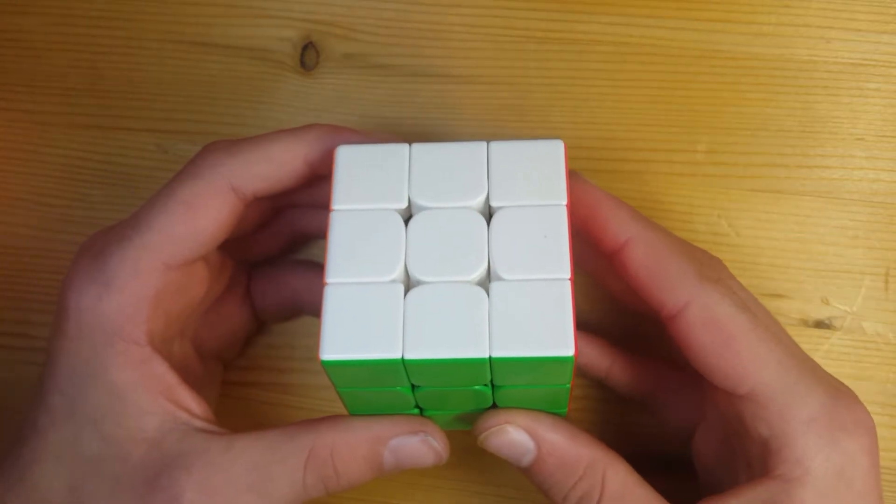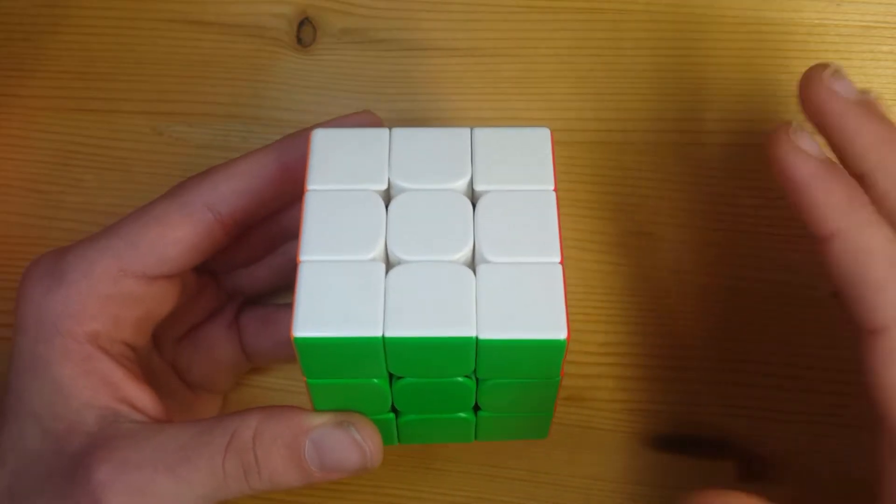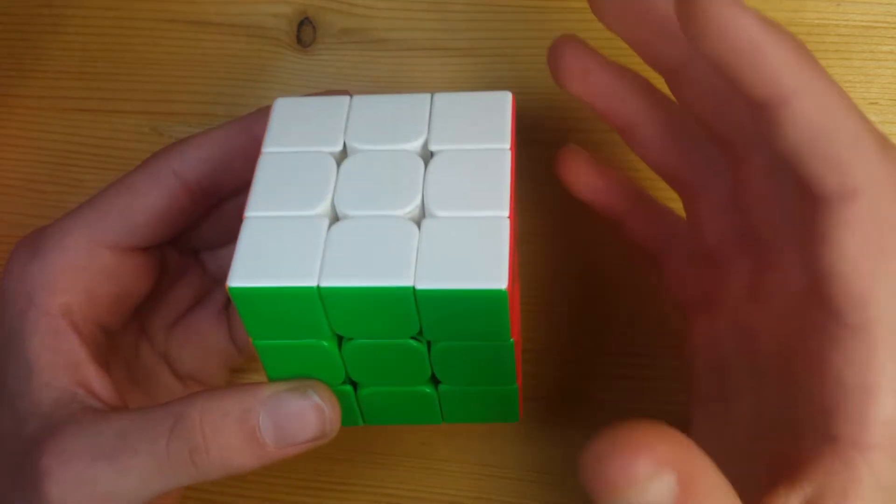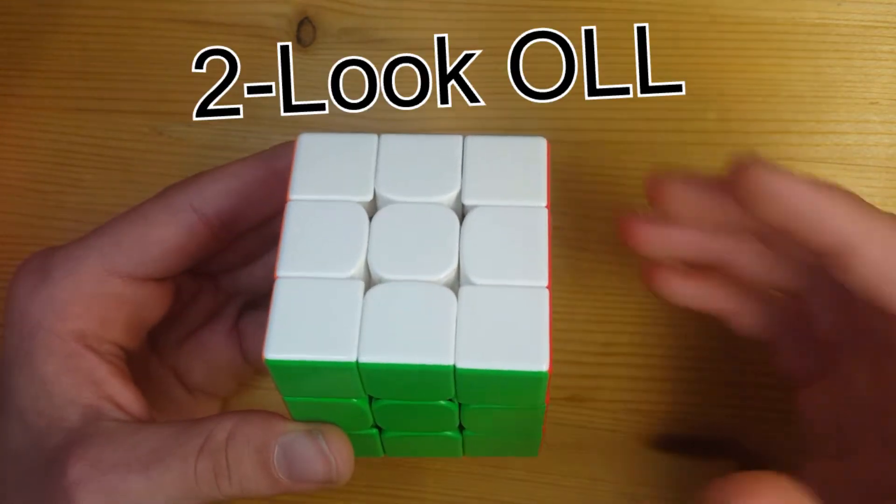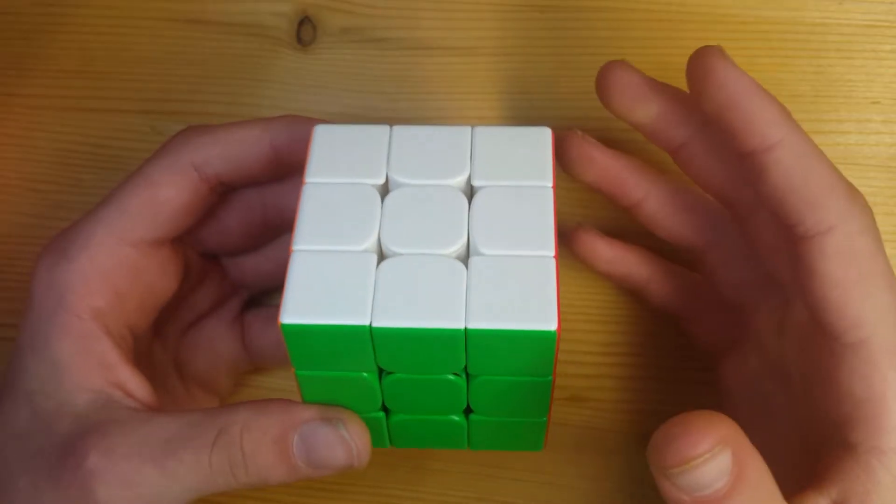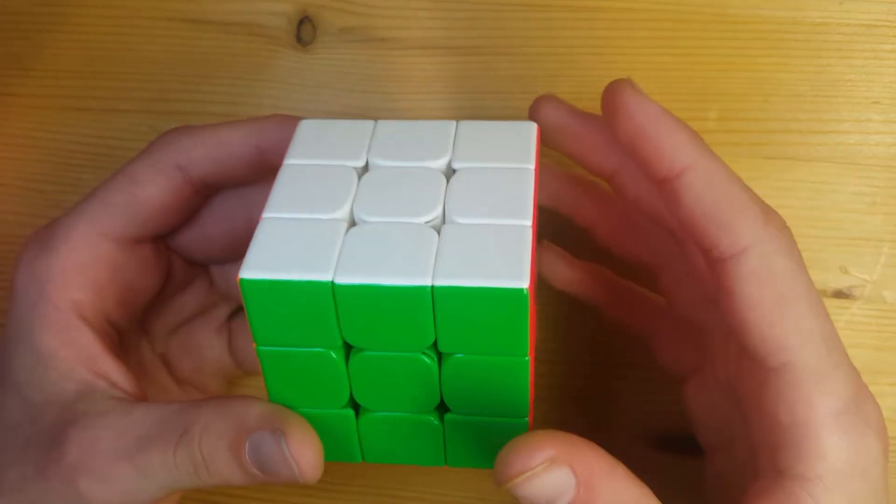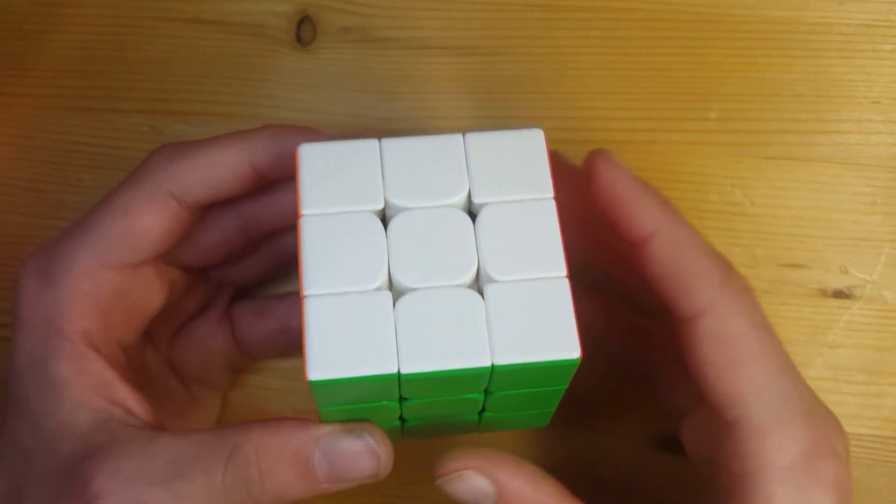Hi guys and welcome back to CFOP Cubing. Today I'm going to move up one level from beginner OLL and talk about 2-look OLL. With beginner OLL you only need to memorize two algorithms, but with 2-look OLL you have to memorize ten.